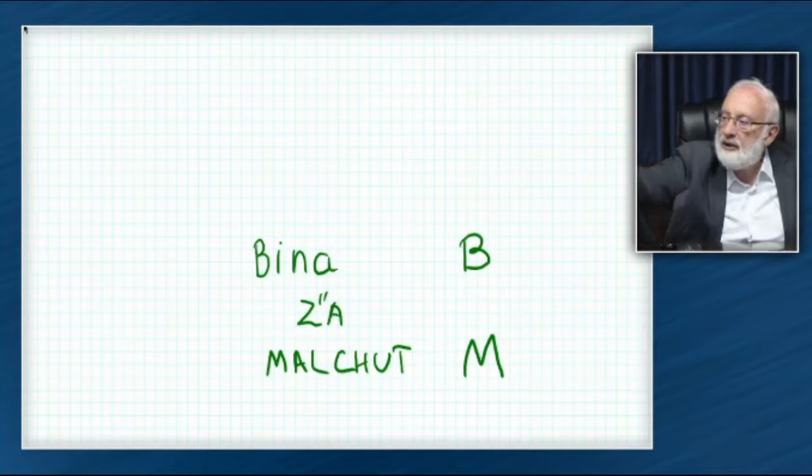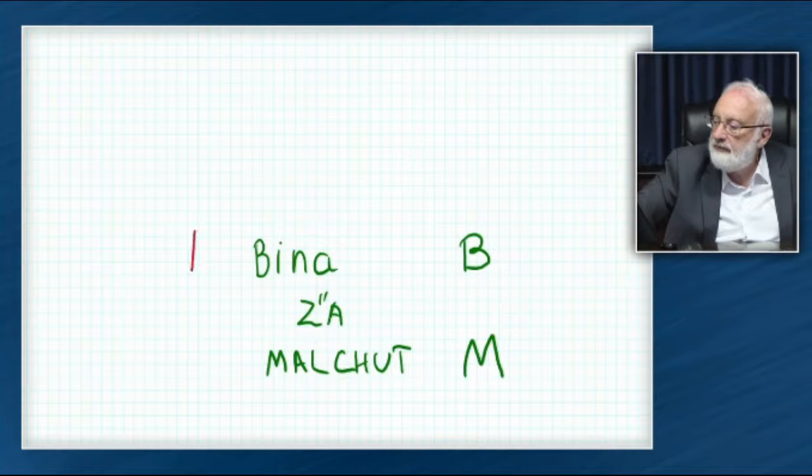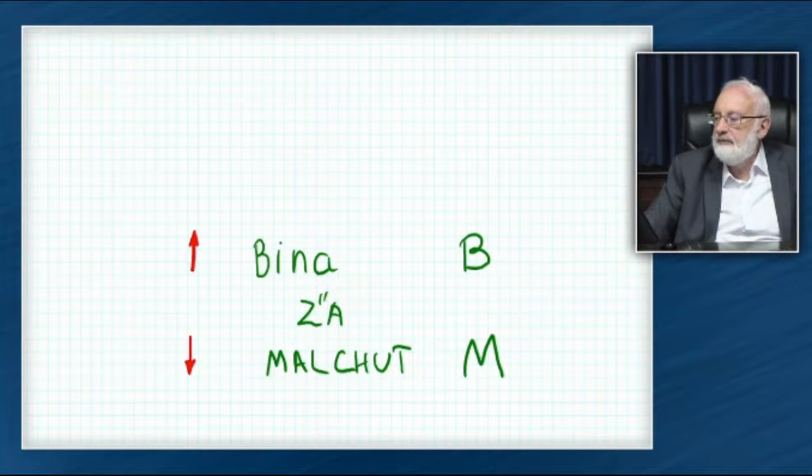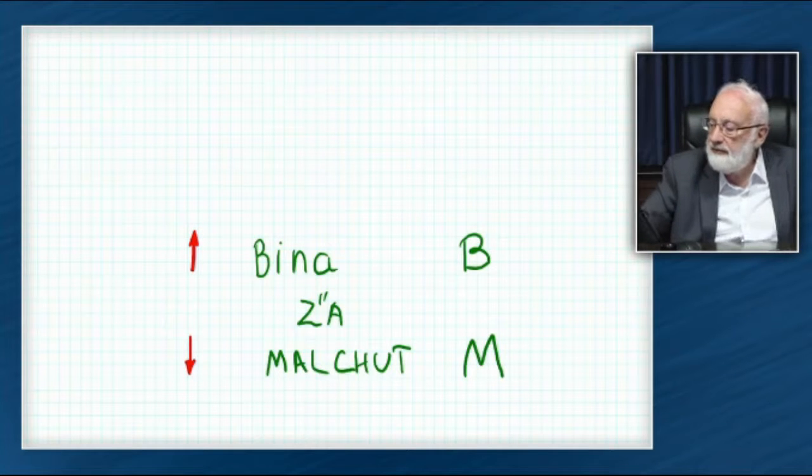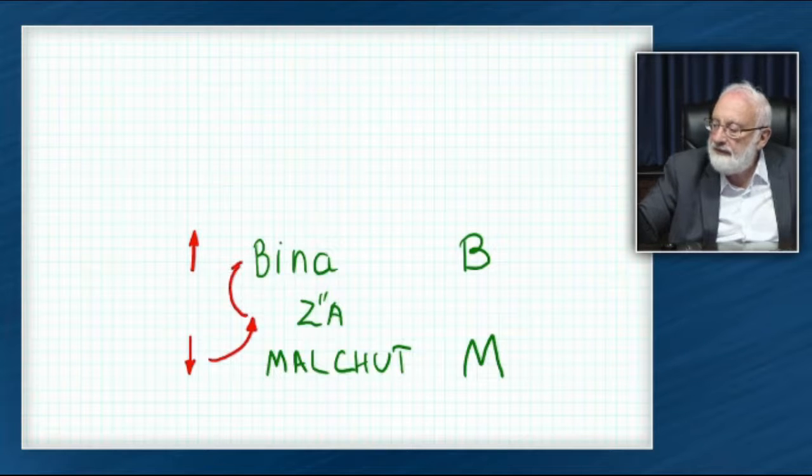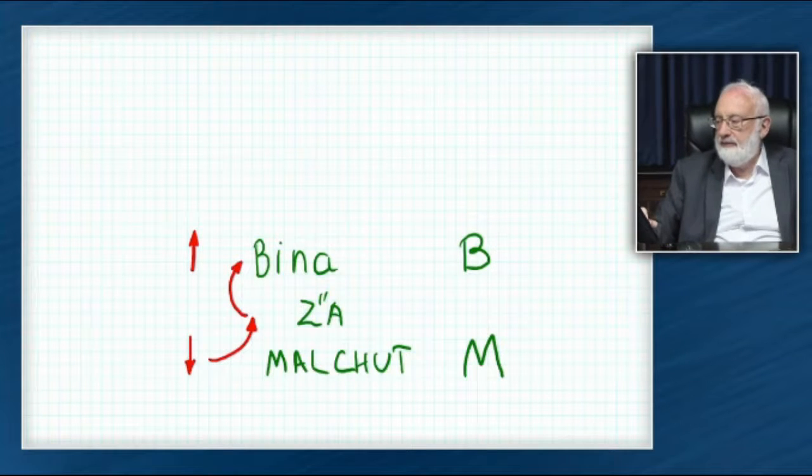Bina is the quality of bestowal. Malchut, the quality of reception. As a result of malchut receiving the qualities of zarampin, by that it can elevate itself to bina.